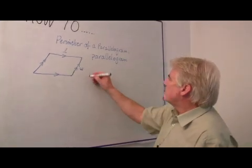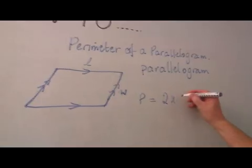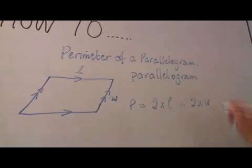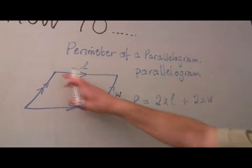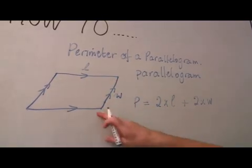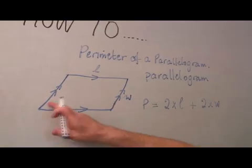So the perimeter is equal to two times L plus two times W. Where L is the length, here, so there's two times L, because there's that one plus that one, plus two times W, there's that one plus that one.